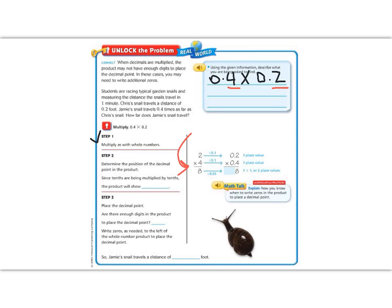So step 2 says, determine the position of the decimal point. Since tenths are being multiplied, then we will have hundredths in our answer because 10 times 10 is 100. So when we answer, we should have a hundredth.